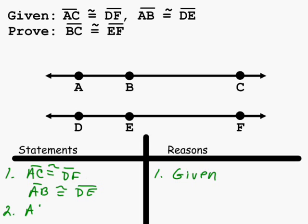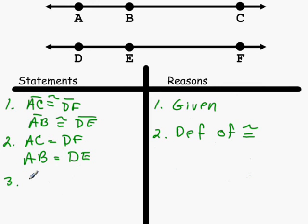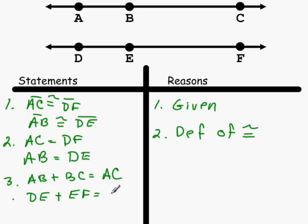Next, we're going to state that the measure of AC is equal to the measure of DF, and the measure of AB is equal to the measure of DE, and that is by the definition of congruence. Then we'll state that AB plus BC is equal to AC, and DE plus EF is equal to DF, and we can say that because of the segment addition postulate.